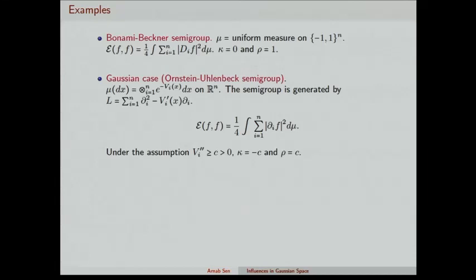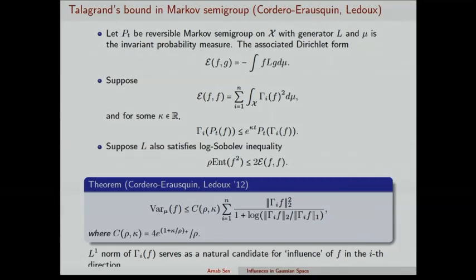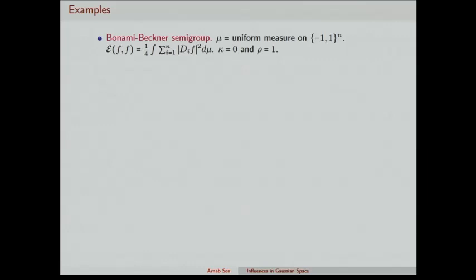Second example: the Gaussian case, where the invariant measure is the Gaussian measure on R^n. The natural semigroup is the Ornstein-Uhlenbeck semigroup, and Γ_i is just the partial derivative of your function. The commutation relation is satisfied with κ = -1, which you can verify by taking the derivative of the Ornstein-Uhlenbeck semigroup. We have the log-Sobolev constant and so on, giving a variance bound for the Gaussian space.